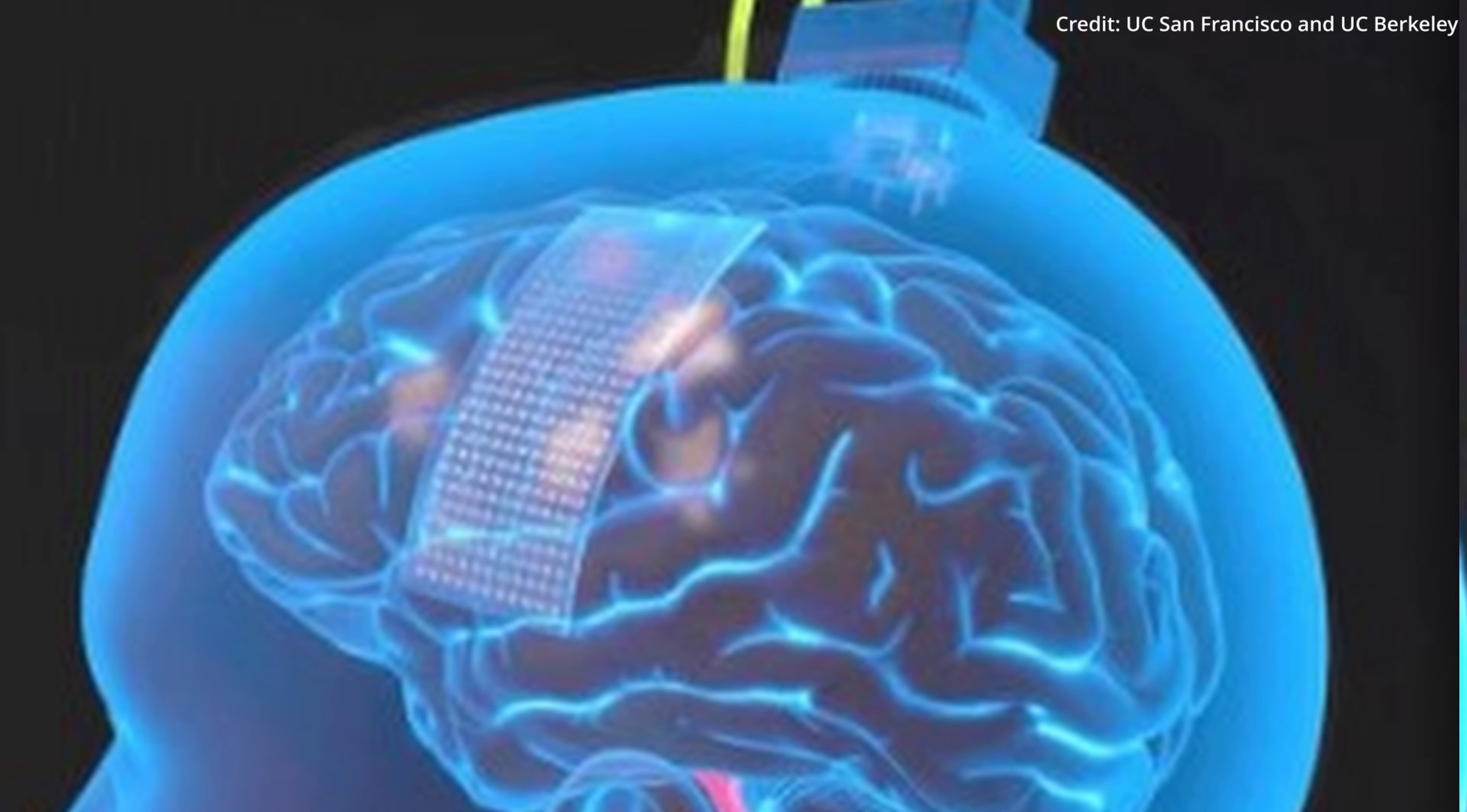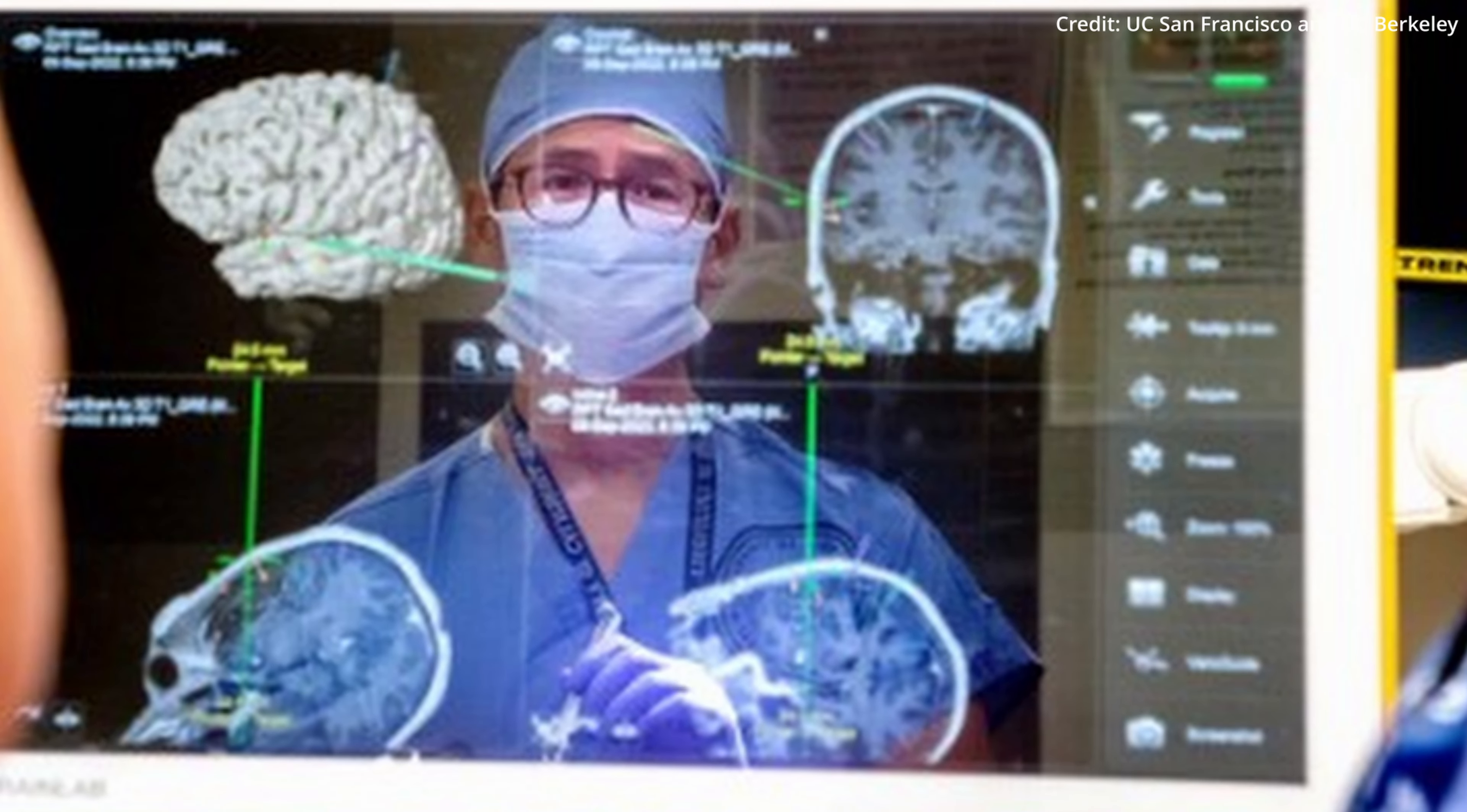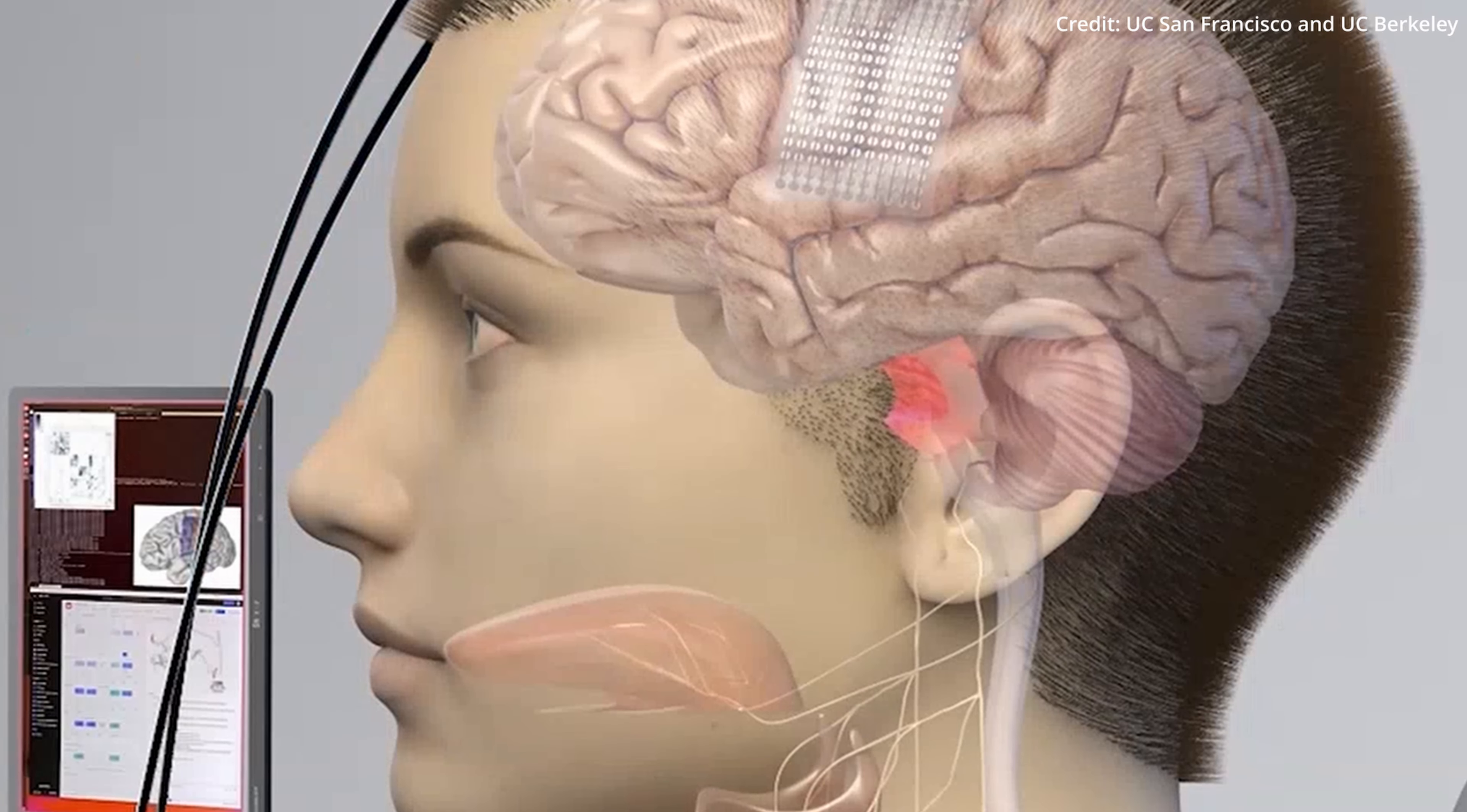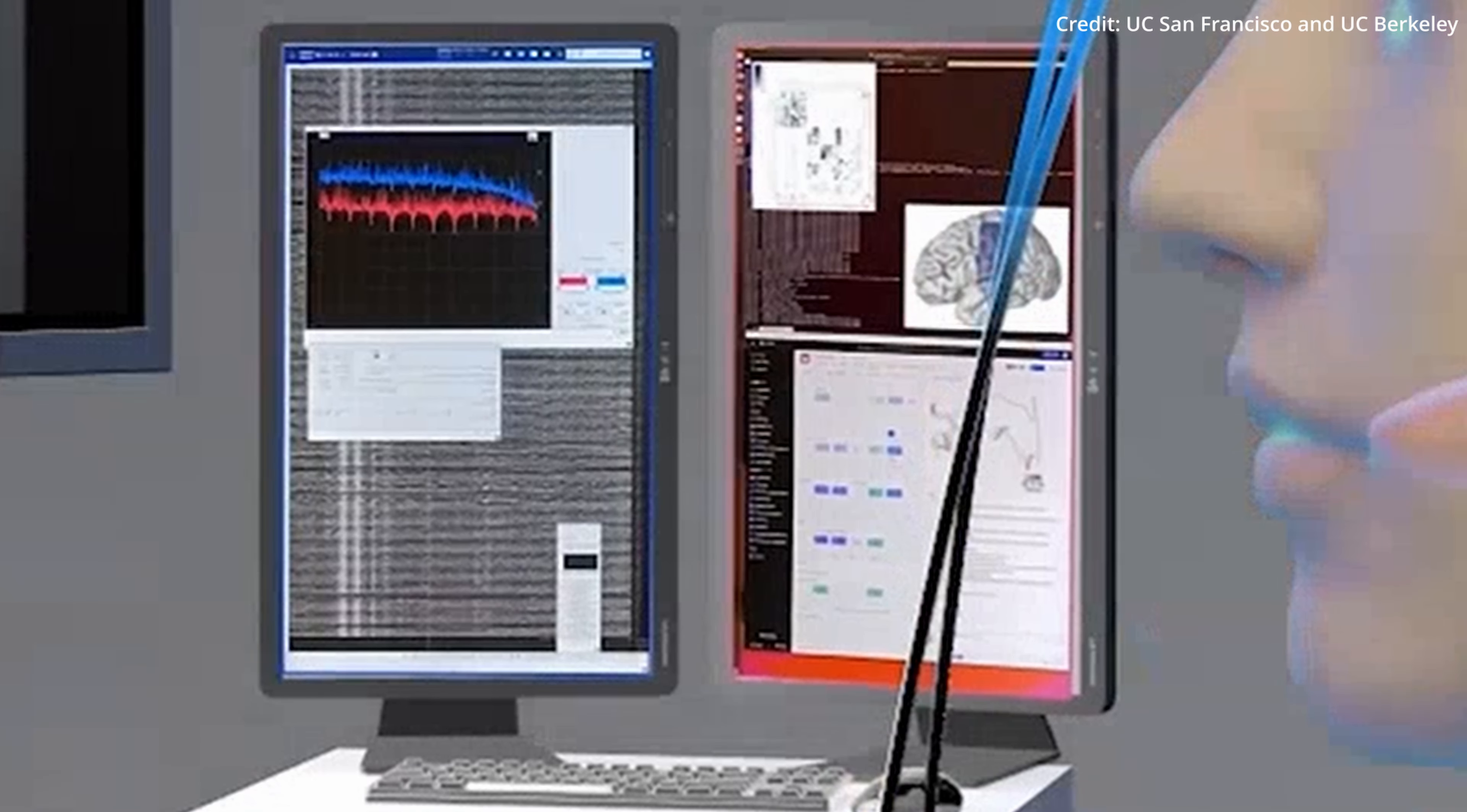The scientists implanted a paper-thin rectangle containing 253 electrodes onto the surface of the woman's brain, specifically in areas that have been identified as critical for speech. These electrodes intercepted the brain signals that would have ordinarily commanded muscles in her tongue, jaw, larynx, and face, had it not been for the stroke. These signals were then transmitted through a cable connected to a port fixed to her head, which ultimately led to a bank of computers that processed the data.